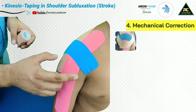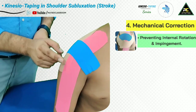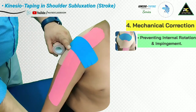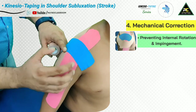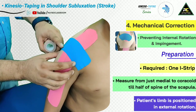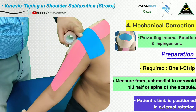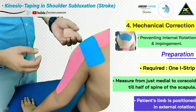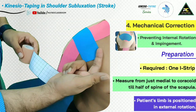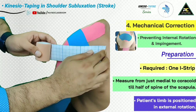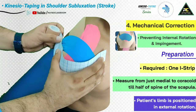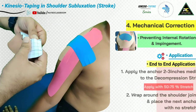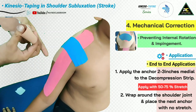The fourth part of the taping application addresses mechanical correction of the position of the humeral head within the glenoid cavity. The goal is to prevent abnormal internal rotation of the humeral head, which is often the common scenario. For this, the upper limb is positioned so that the humeral head is externally rotated. The patient sits in an upright posture, and the tape is measured from just medial to the coracoid process, around the shoulder behind to around half of the spine of the scapula. An anchor is created from one end, paper backing removed, and applied around two inches medial to the blue I-strip.